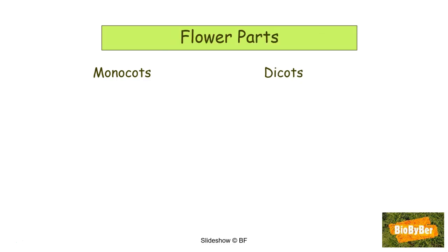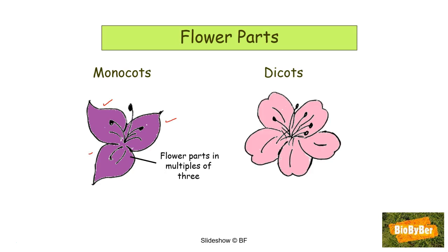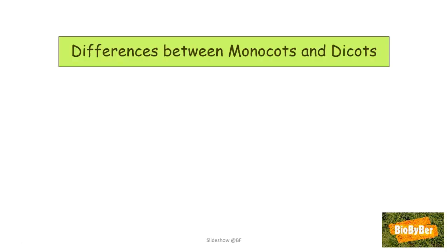Lastly, the difference between monocots and dicots can be seen in their floral parts. Monocotyledonous plants usually have their flower parts in multiples of three — for example, three petals or three stamens. Dicot plants tend to have their flower parts in multiples of four or five — so they might have four or five petals and four or five stamens.